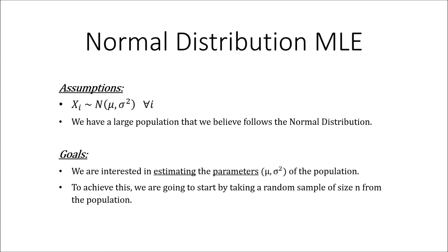When we're deriving the maximum likelihood estimates for the normal distribution, our assumptions are that our underlying data — the population — follows a normal distribution, where x_i is distributed normally with mean mu and variance sigma squared, and they are iid: independent and identically distributed normal random variables. But we don't actually know what the population mean or the population variance is.